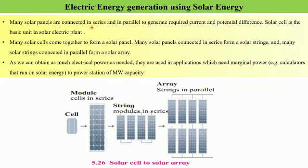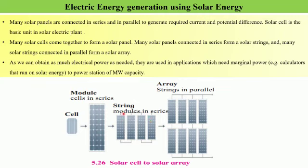Many solar panels are connected in series and in parallel to generate the required current and potential difference. The solar cell is the basic unit in a solar electric plant. Many solar cells come together to form a solar panel. Many solar panels connected in series form a solar string, and many solar strings connected in parallel form a solar array. Here we can see strings of solar panels connected in parallel, forming a solar array.